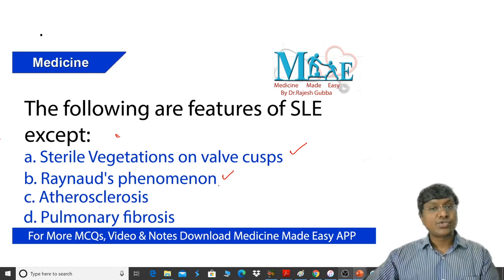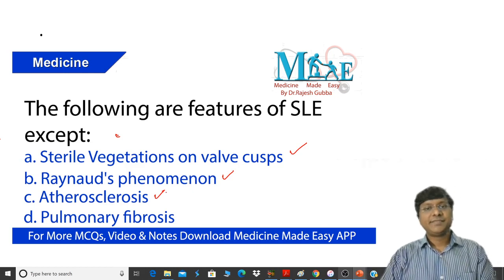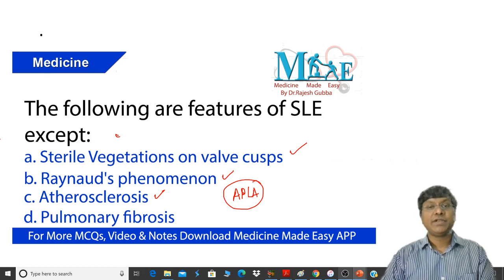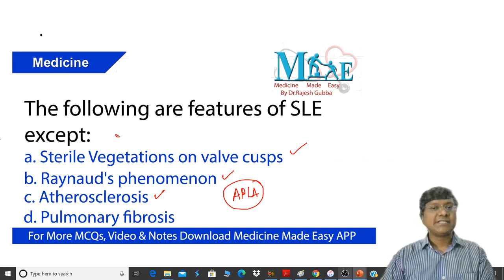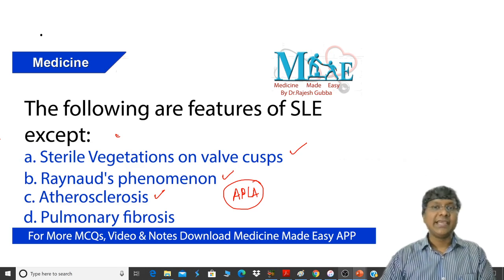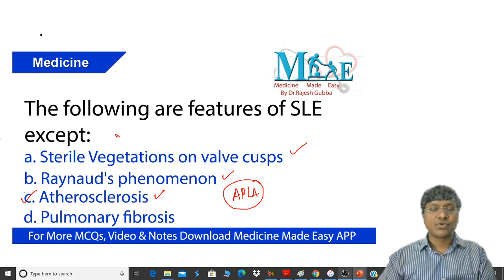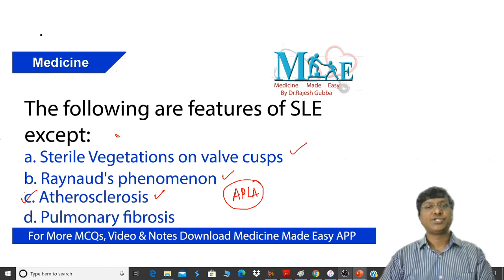Raynaud's phenomenon can also occur in these individuals as part of premature atherosclerosis. In patients with SLE, they will have premature atherosclerosis due to antiphospholipid antibody syndrome — APS — which is the clinical scenario where there is a high chance of thrombus formation. Because of this, blood vessels get occluded with thrombus, resulting in either myocardial infarction, cerebrovascular accident, or Raynaud's phenomenon. Both Raynaud's phenomenon and premature atherosclerosis are important features of SLE.